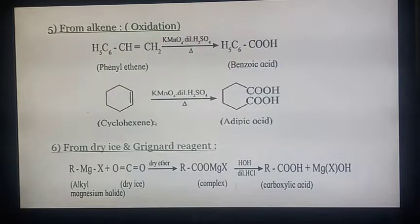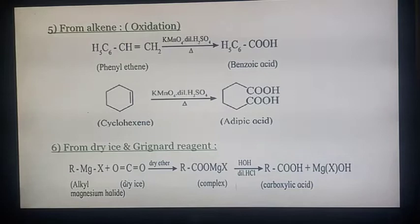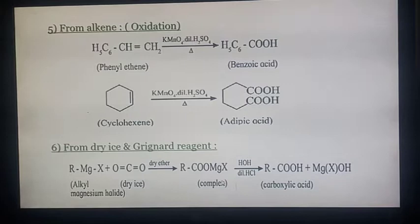Next method is from dry ice using Grignard reagent. When RMgX is treated with dry ice in presence of pure and dry ether, it gives a magnesium complex, which on acid hydrolysis gives the corresponding carboxylic acid.